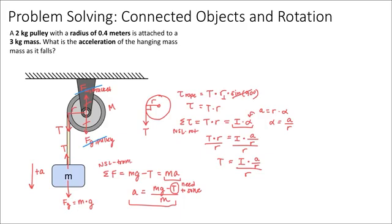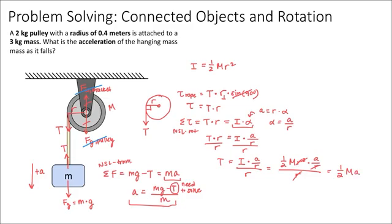Plugging in the moment of inertia (one half M r squared) and simplifying, the r squared on top cancels with r on the bottom, and the remaining r cancels too, making the radius of the pulley insignificant. We get that the tension in the rope equals one half the mass of the pulley times the linear acceleration of the hanging mass.